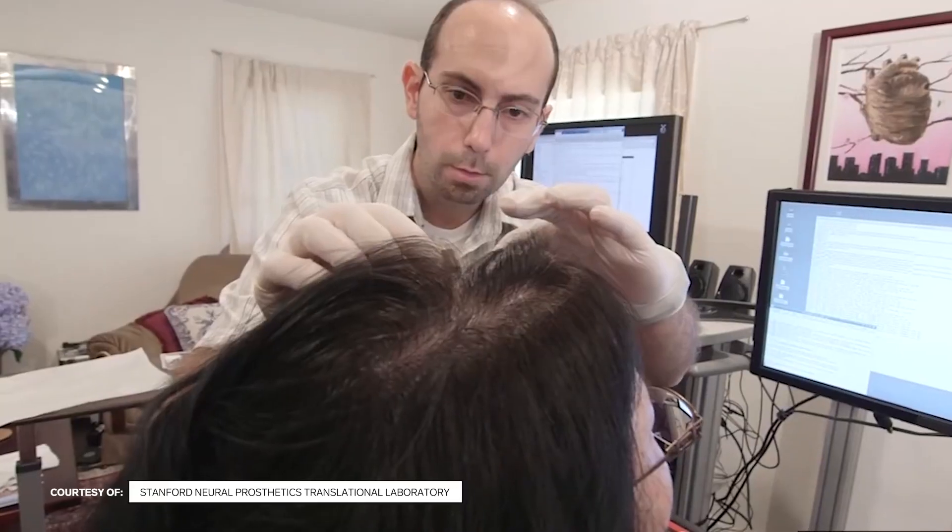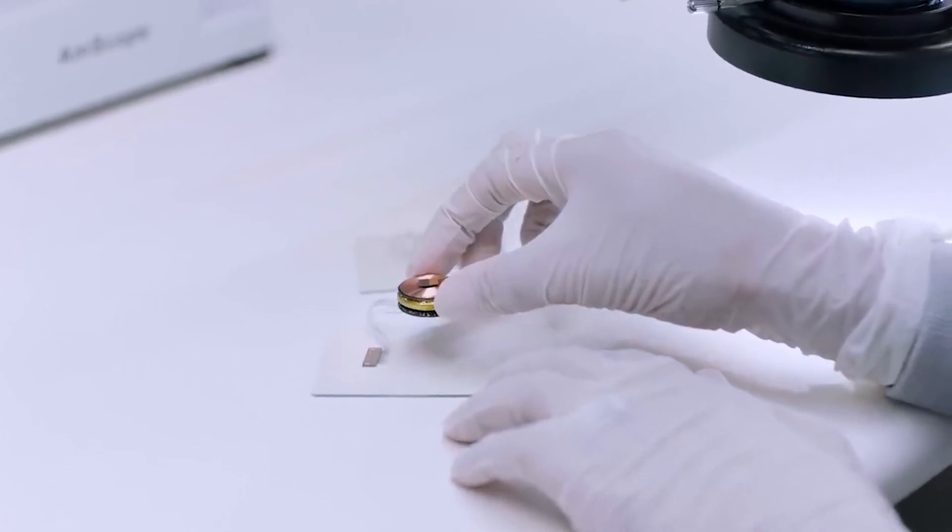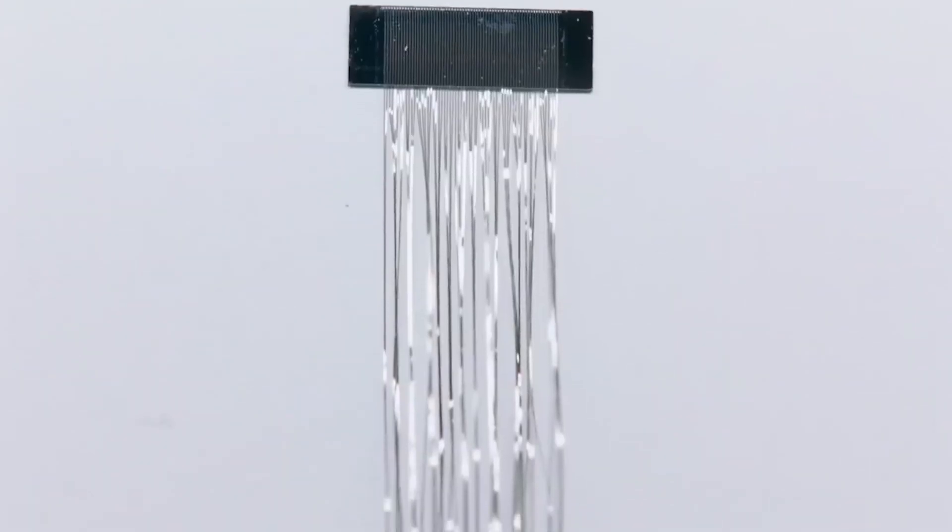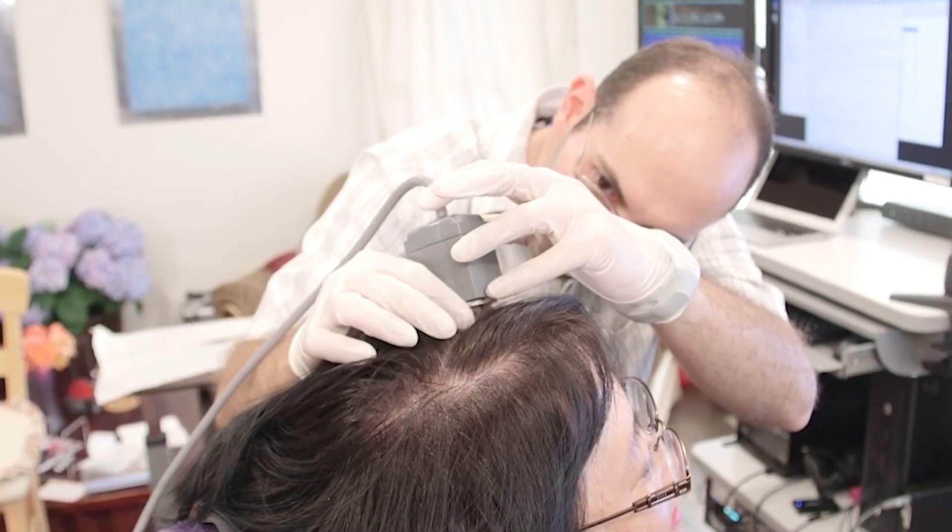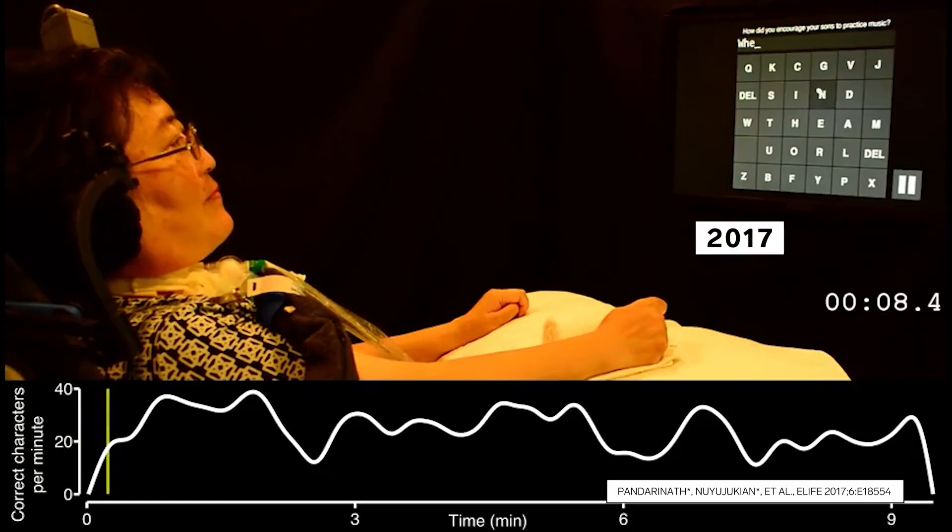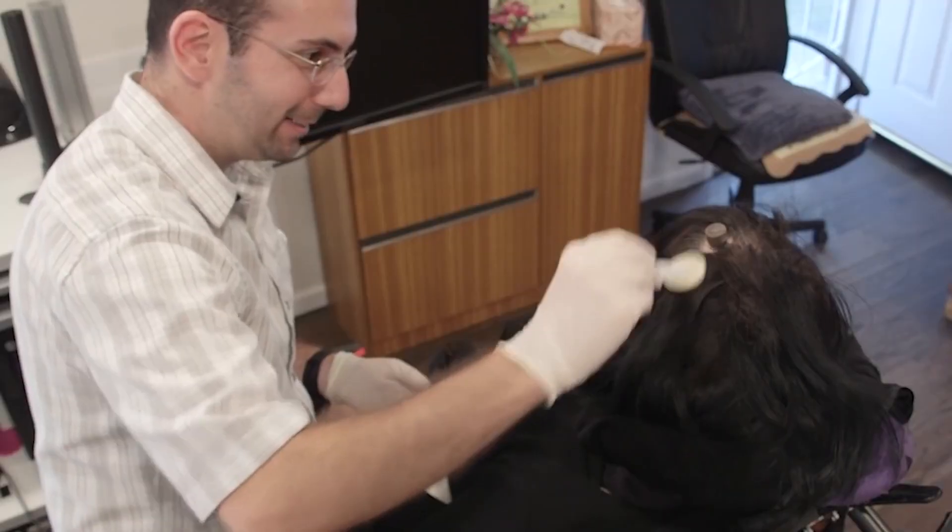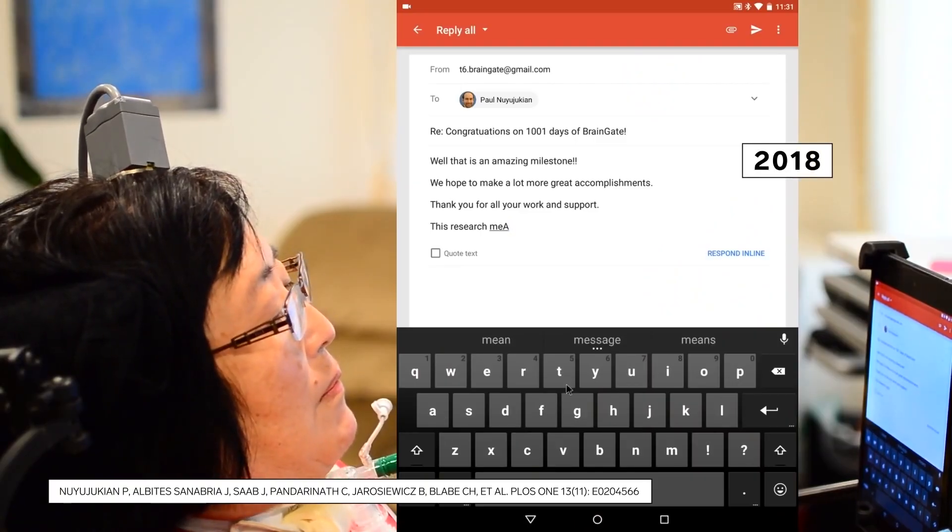Neuralink is a neurotechnology company founded by Elon Musk in 2016. The company is focused on developing implantable brain-machine interfaces, or BMIs, that can connect the human brain to computers. Neuralink aims to create technology that can enhance human cognitive and physical abilities, ultimately leading to a future where humans and computers are seamlessly integrated.